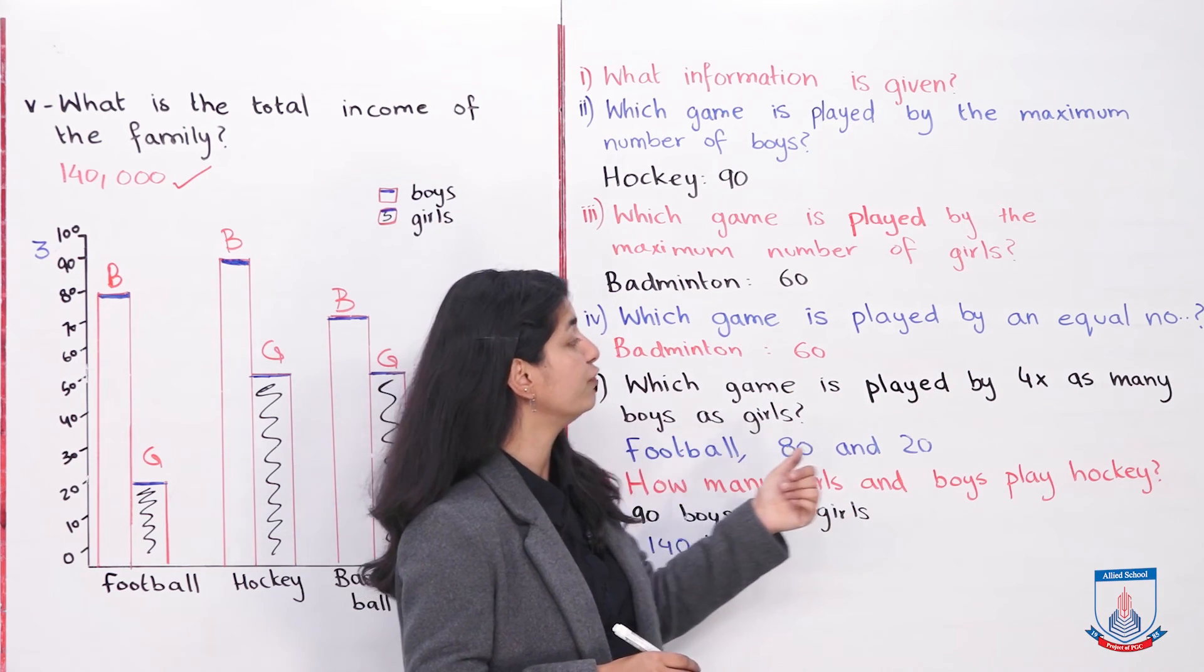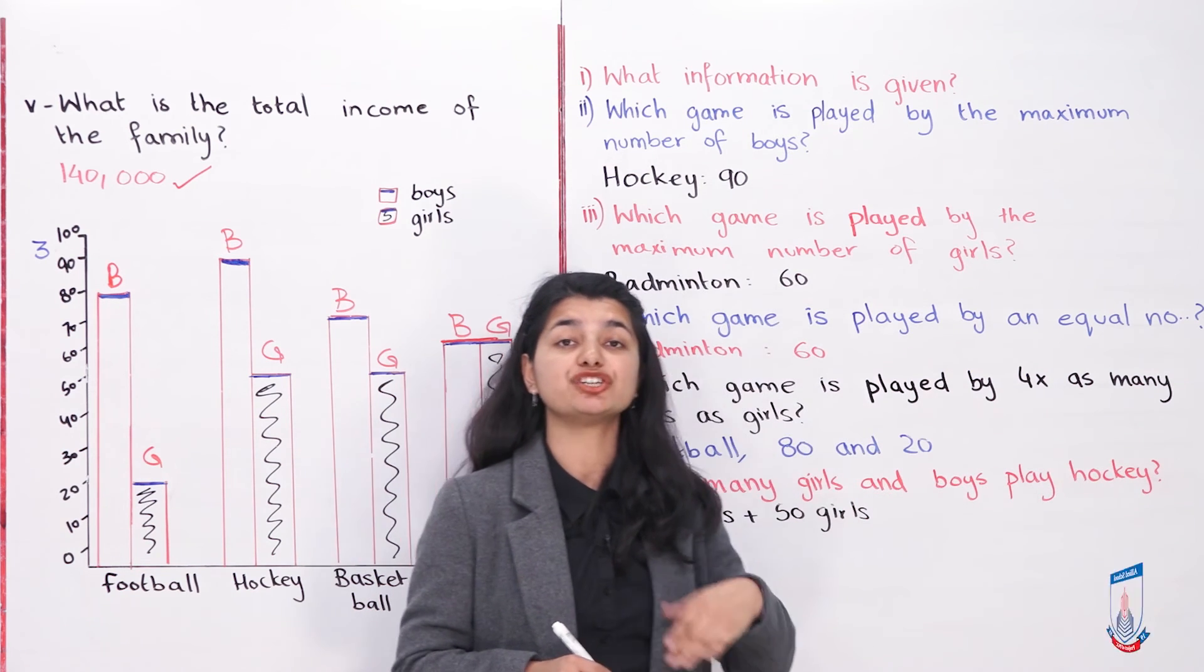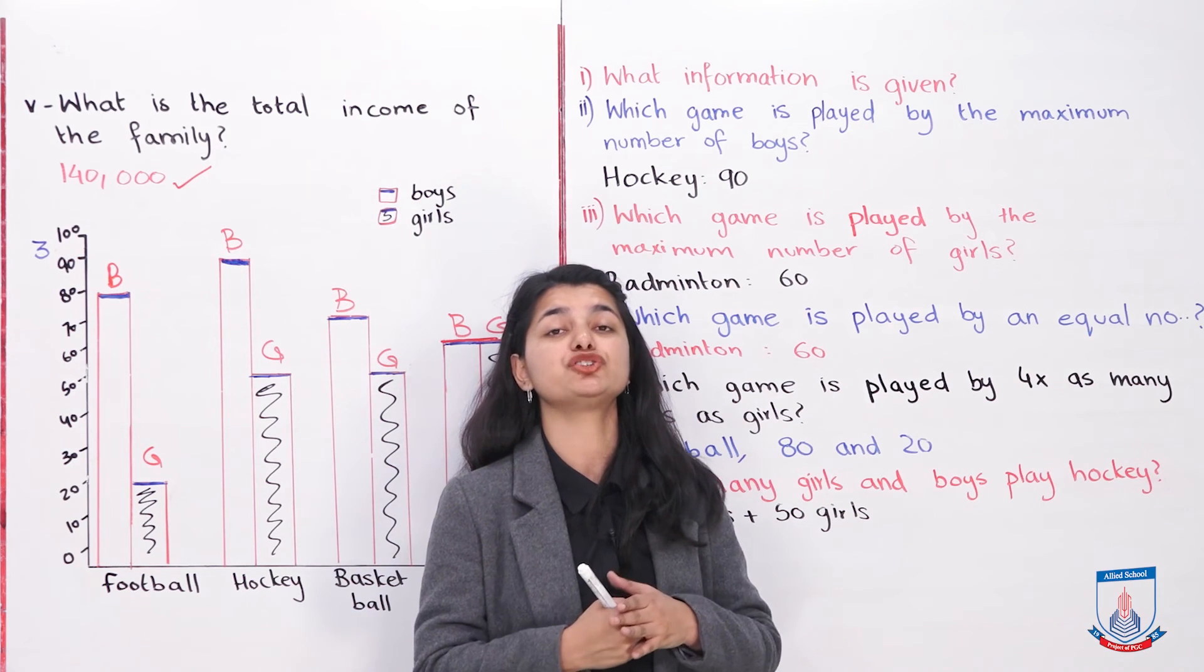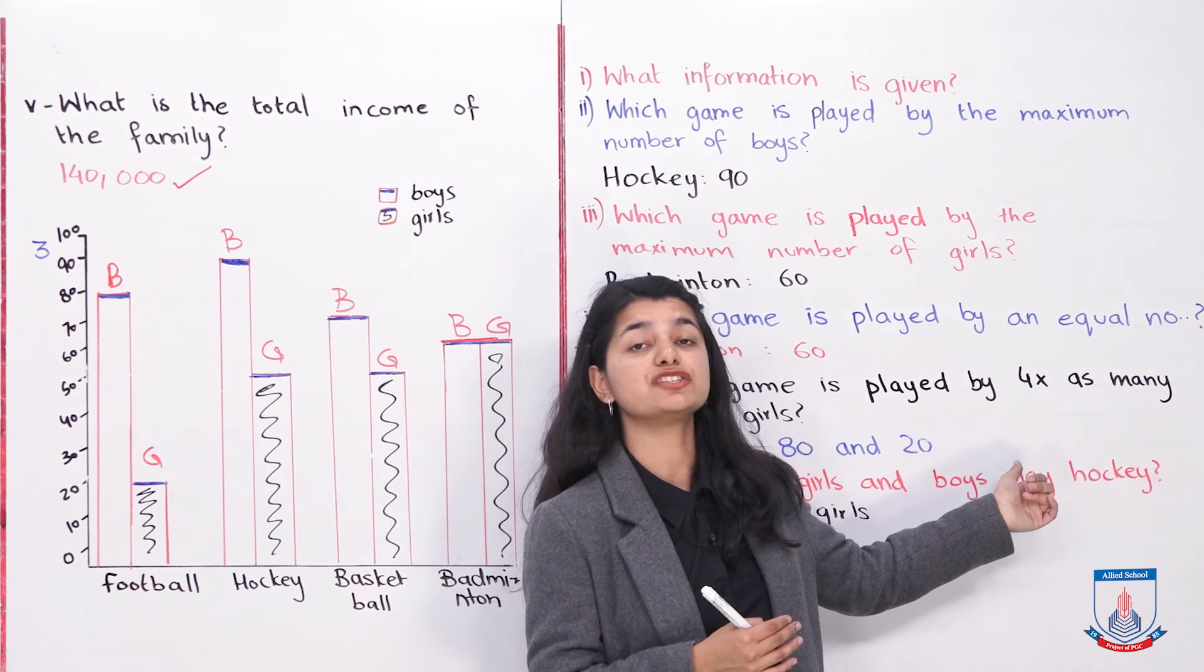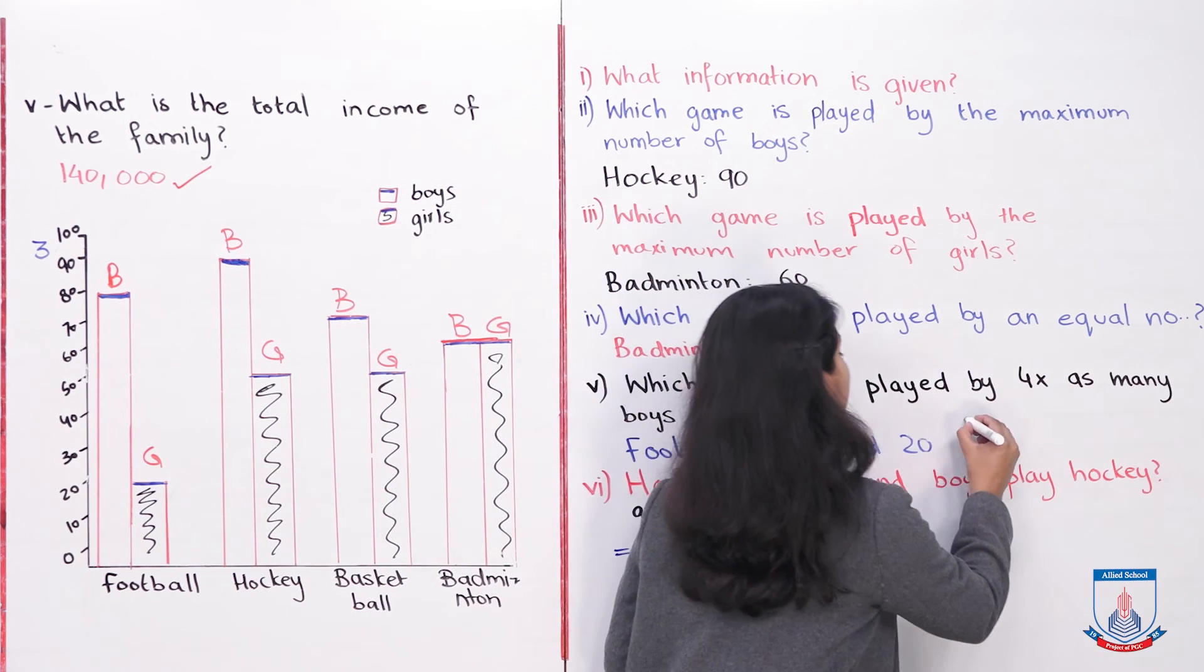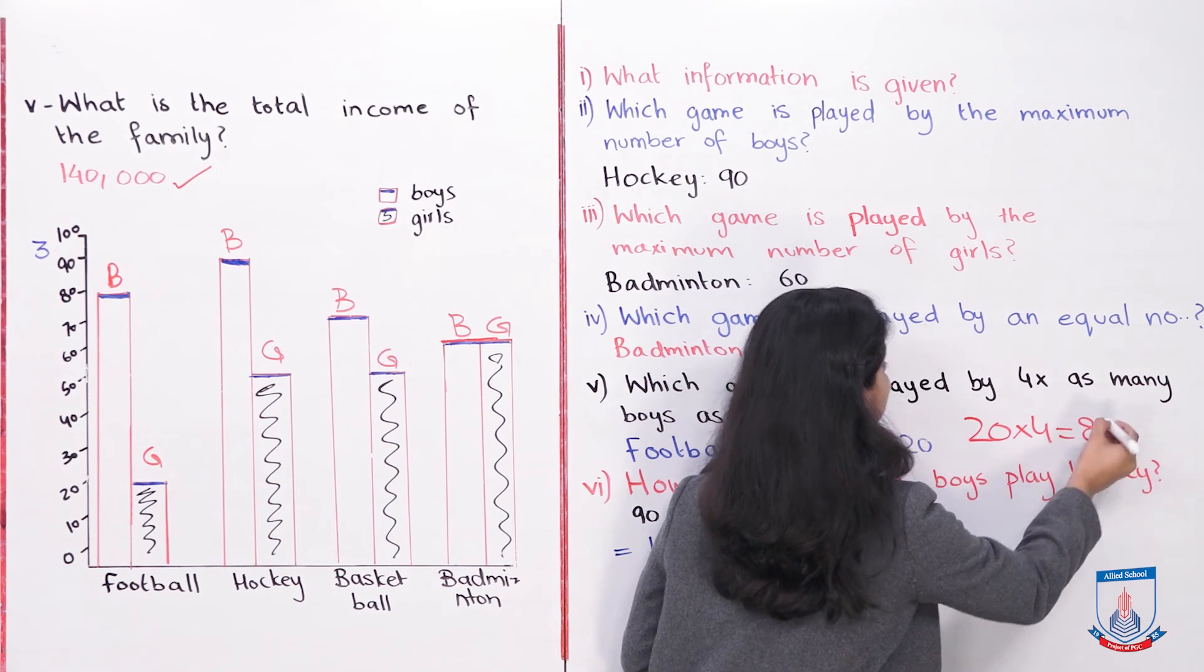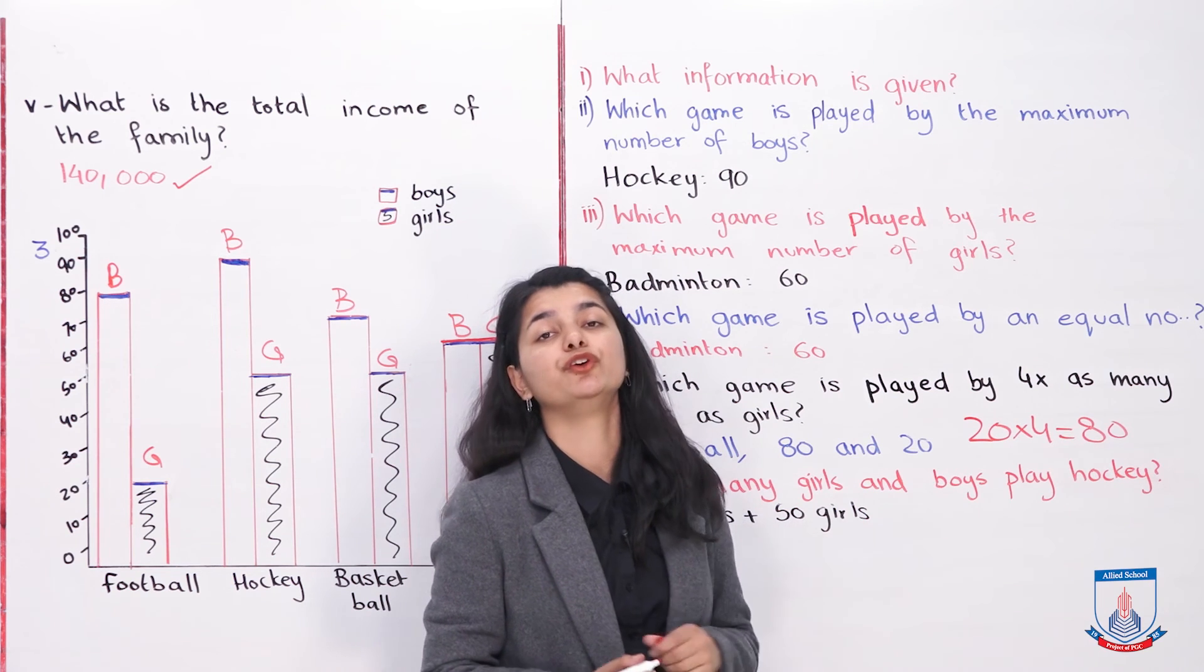Then we have: which game is played by 4 times as many boys as girls? Look at all the differences. The game with the most difference is football. The boys play 80 in football, the girls play 20. 20 times 4 is 80. So 4 times as many boys engage in the sport in comparison to girls. So that is football.